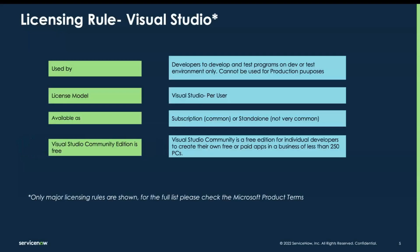Let's have a quick peek at the licensing rules. It can only be used for development and test environments; it cannot be used for production purposes. The licensing model is per-user-based and available as a subscription. Visual Studio is provided in many flavors like Enterprise, Test Professional, and many more. However, the Community Edition is a free edition for individual developers. For the full list, please check the Microsoft product terms.